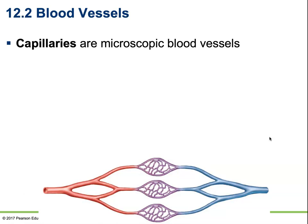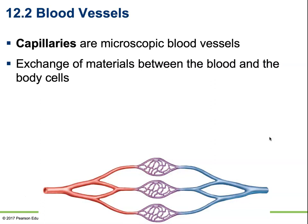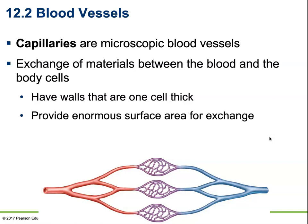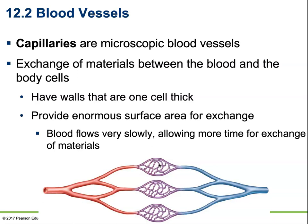Capillaries are going to be microscopic — incredibly tiny. They are the site of exchange of materials between the blood and the body cells. They have tiny walls that are only about one cell thick, providing an enormous amount of surface area for exchange. When we increase the surface area like this, blood flow actually slows down. It's like going along superhighways and then branching off into many different routes — blood flow slows down considerably, giving time for exchange to happen between the capillaries and the surrounding cell membranes. Blood flows very slowly, allowing more time for exchange of materials.